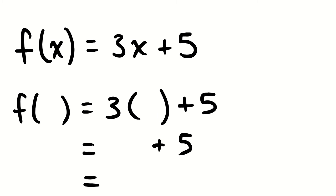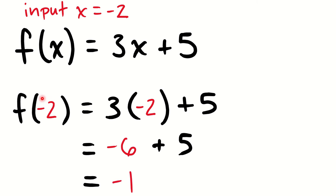If I look at one more input, this time my input is negative 2. Placing negative 2 into the function, 3 times negative 2 becomes negative 6. Negative 6 plus 5 gives me negative 1. So f of negative 2 is negative 1.